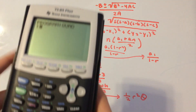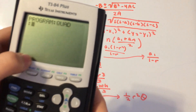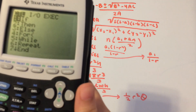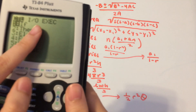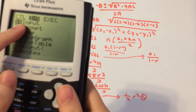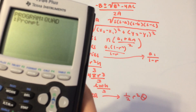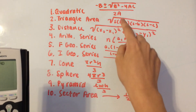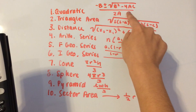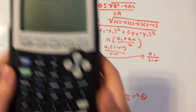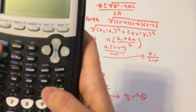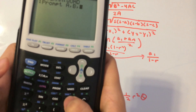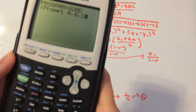Press Enter and it's prompting us to put in the directions for this program. Hit Program again, then move over to IO and go down to Prompt. We're going to prompt for three variables: A, B, and C — as you can see in the quadratic formula. So type Alpha A, comma, Alpha B, comma, Alpha C, then hit Enter.